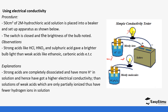Strong acids dissociate fully, producing many hydrogen ions which support electrical conductivity — conductivity is a result of mobile ions. Because there are so many hydrogen ions in solution, electricity is conducted more readily. Weak acids dissociate only partially, giving fewer ions, so fewer ions are available to move electricity through the system, which is why the bulb does not light as brightly.